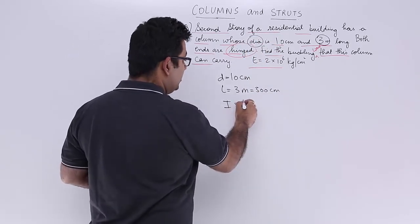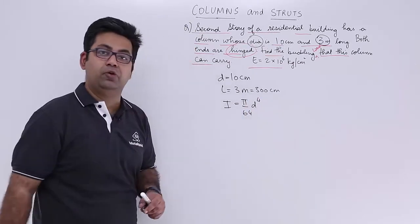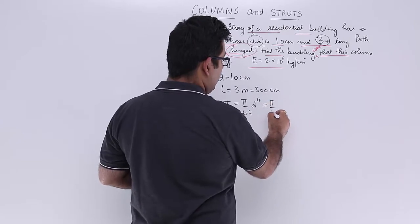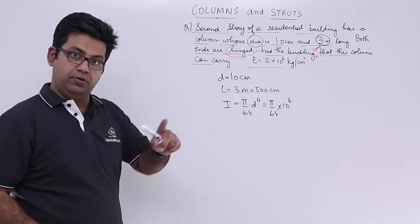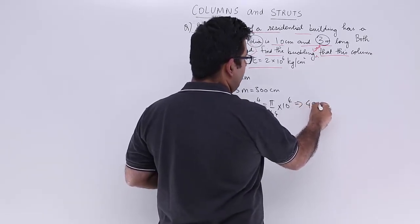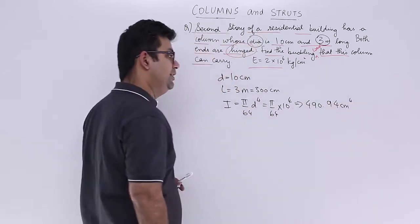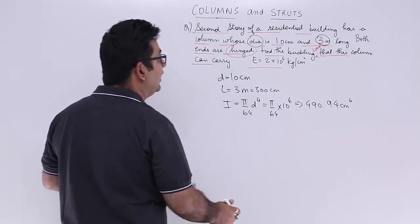So the moment of inertia would be that of a circle, π by 64 into d to the power 4. So this becomes π upon 64 into 10 to the power 4. So then you have your scientific calculators and this will give you a value which is 490.94 cm to the power 4. Okay, so we are done with that.